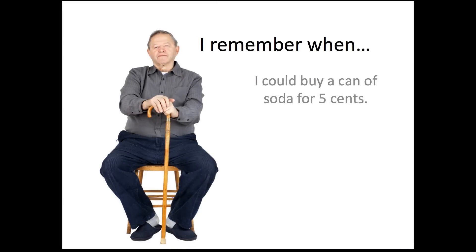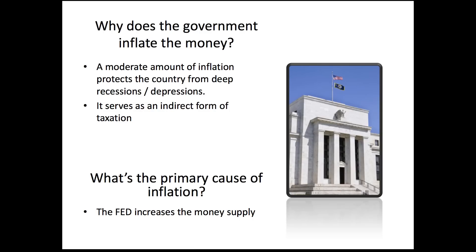Everyone can remember sitting down with their grandfather and hearing that he could buy a can of soda for 5 cents — that's what we're talking about when we talk about inflation. The Federal Reserve will tell you that they inflate the money to protect the country from deep recessions or depressions. But another reason that a lot of people don't talk about is that it serves as an indirect form of taxation.